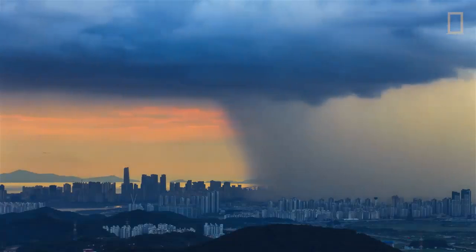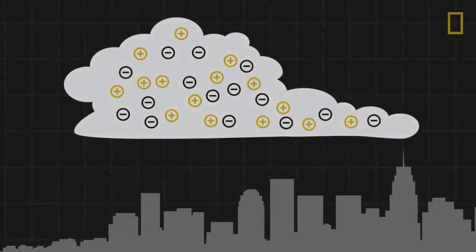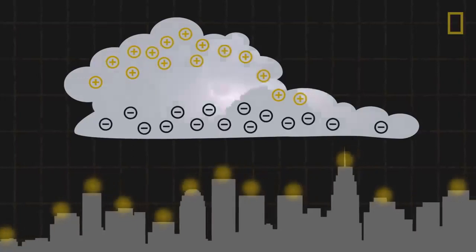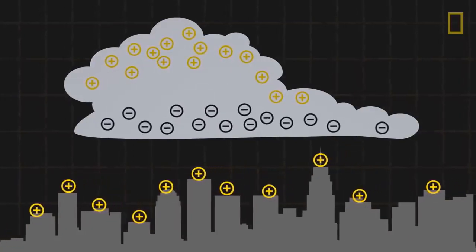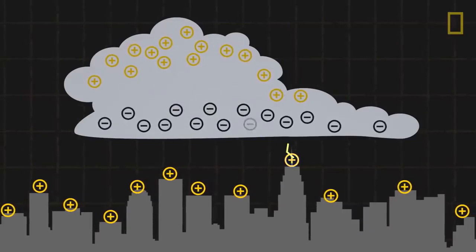Thunderstorms also help regulate the electrical balance between the atmosphere and the planet. As clouds in a thunderstorm develop, excess positive and negative charges form within them. At a certain point, this buildup of opposite charges leads to the transfer of electrons in the form of lightning.